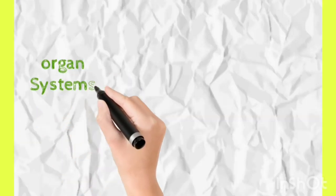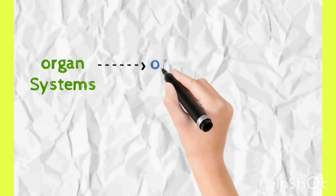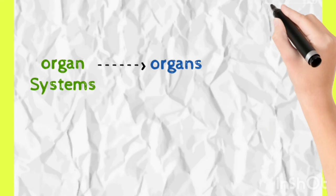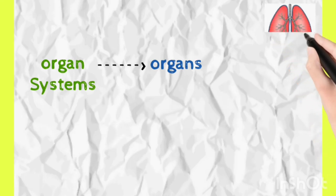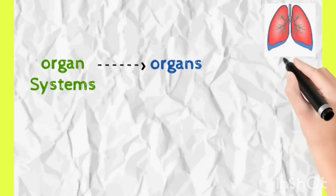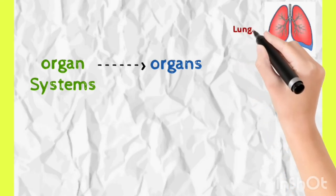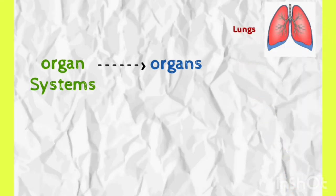These organ systems are made by some organs. Some major organs you will know by name: there are lungs, which belong to the respiratory system, and then we have the heart, which belongs to the cardiovascular system.